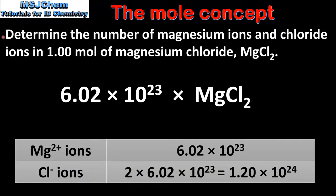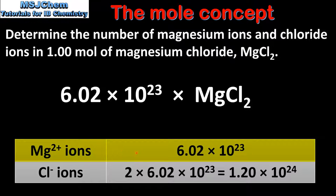In the next example we'll determine the number of magnesium ions and chloride ions in one mole of magnesium chloride. Magnesium chloride is an ionic compound made up of magnesium ions and chloride ions. In one mole of magnesium chloride we have 6.02 x 10 to the 23 formula units. The formula for magnesium chloride is MgCl2, which tells us the ratio of magnesium ions to chloride ions is 1 to 2. So for the number of magnesium ions we have 6.02 x 10 to the 23, and for the number of chloride ions we have 2 times the Avogadro constant, which gives 1.20 x 10 to the 24 chloride ions.